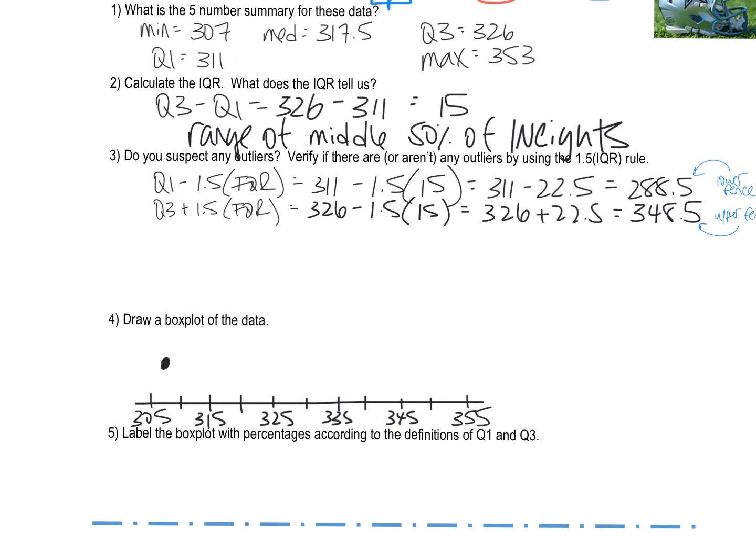My next number in the five number summary was 311. So a dot goes there. A little bit past 310, obviously. The median was 317.5. I'm looking right up here at my five number summary. 317.5 is between 315 and 320. Q3 was 326. So that's going to go about here. And my maximum number was 353. So I'm going to put a dot there.